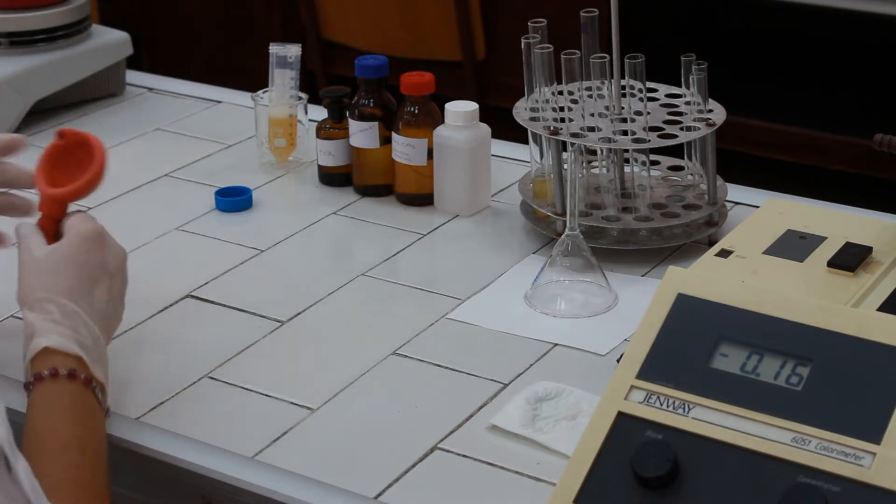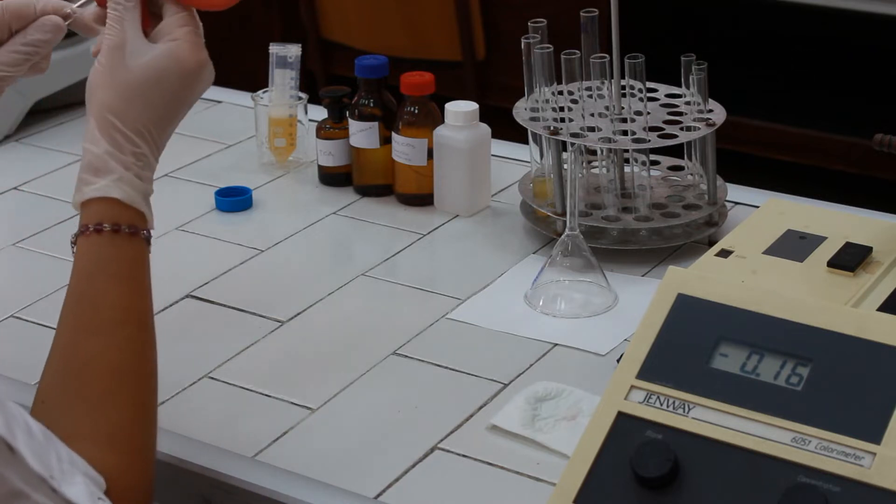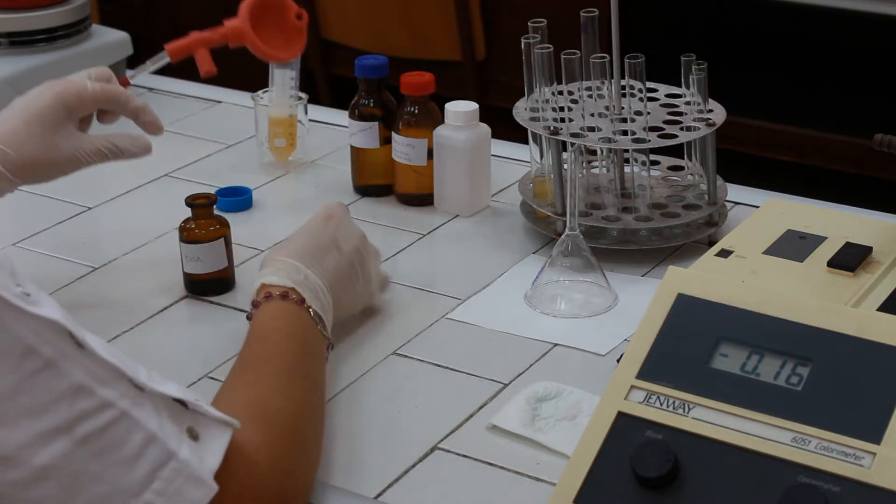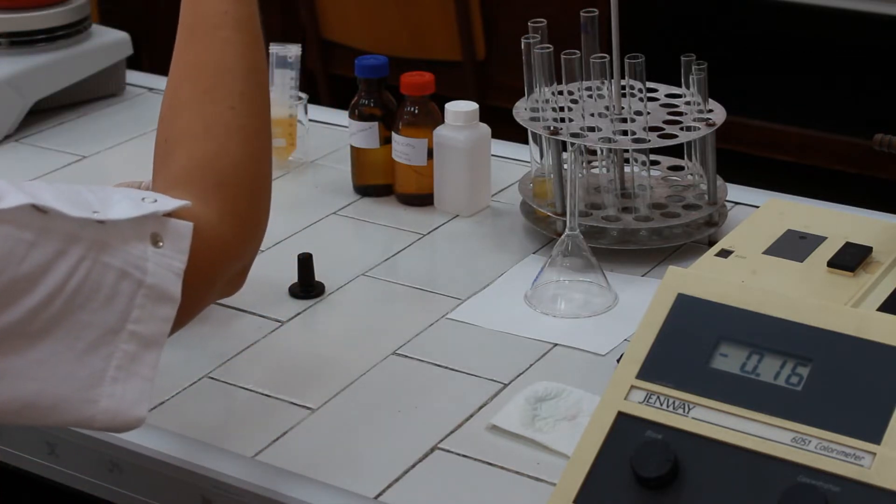We add 5 ml of TCA to the test tube in order to precipitate the proteins from the blood plasma sample.